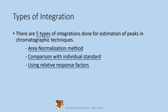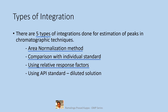Using relative response factors — here the response factor is the relative response factor. It is the ratio of area of unit concentration of the sample versus unit concentration of another standard. Using API standard diluted solution: in this method, all impurities are estimated using a single diluted standard of API.